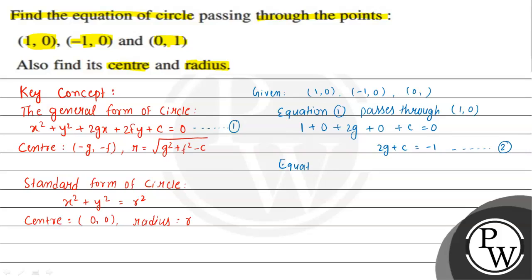Similarly, when equation 1 passes through point (-1,0), we substitute x = -1 and y = 0 into equation 1. This gives us 1 + 0 - 2g + 0 + c = 0, so we can write -2g + c = -1. Consider this as equation 3.